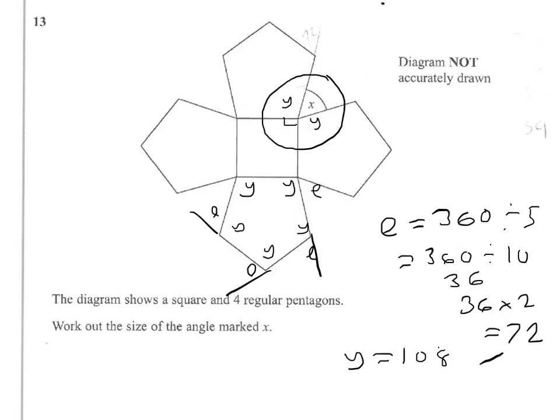So if we look at what we've got, the angles around the point make 360, and we've got to take away from that to find our angle X, 108 times 2, and we've got to take away the 90 degrees as well. And that will leave us the angle we're looking for, X.